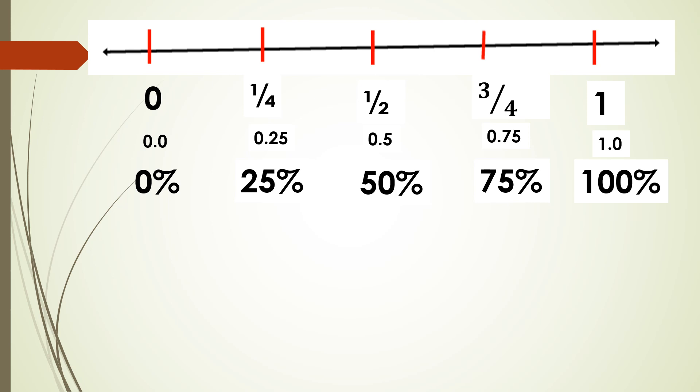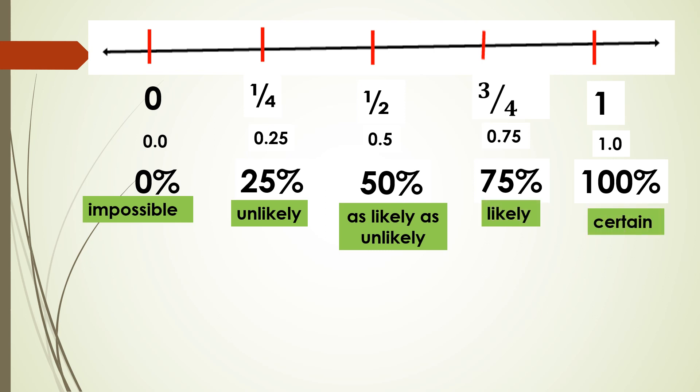Again, in describing the probability of an event we use the following terms: impossible, unlikely, as likely as unlikely, likely, and certain. Remember that the closer its probability to 0, the more unlikely the event is to happen. And the closer it is to 1, the more likely the event is to happen.